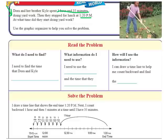So we're going to have to go backwards from 1:20 PM. We're going to have to go backwards 1 hour and 35 minutes. So we're going to fill in this graphic organizer to help us think about the process of solving this. What do I need to find? I need to find the time that Dora and Kyle started their yard work.